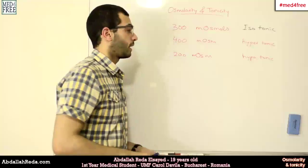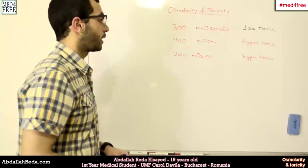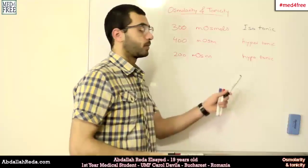Hypo because it's lower than the normal body osmolarity and hyper because it's higher.